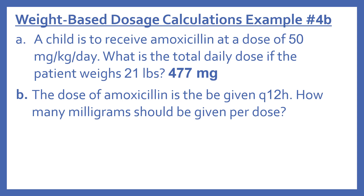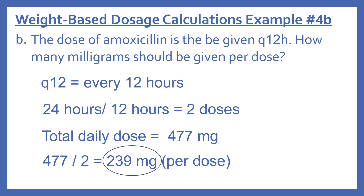Part B: the amoxicillin dose is to be given Q12H. How many milligrams should be given per dose? Q12H means every 12 hours, so 24 ÷ 12 = 2 doses per day. Total daily dose was 477 mg. 477 ÷ 2 = 239 mg per dose.